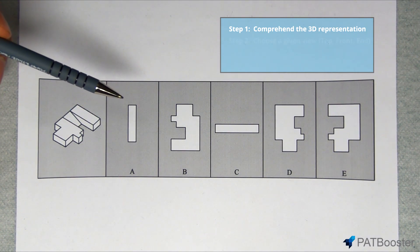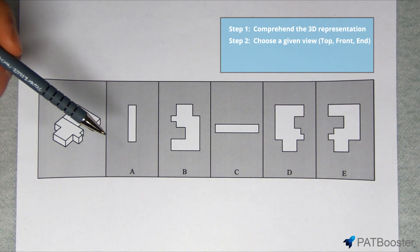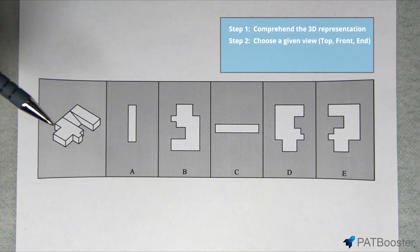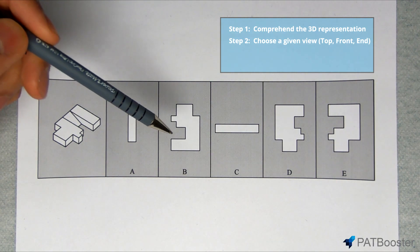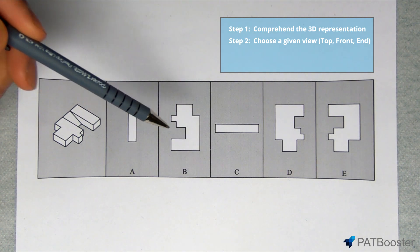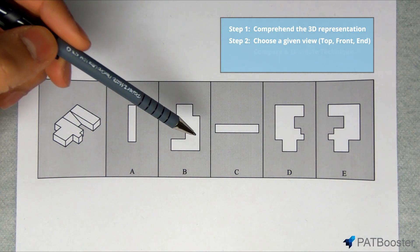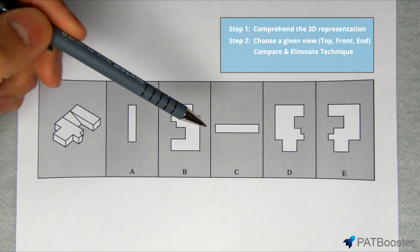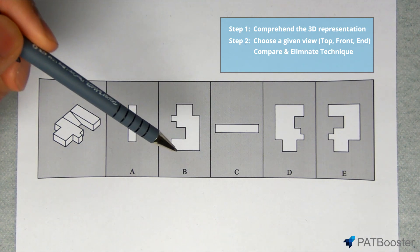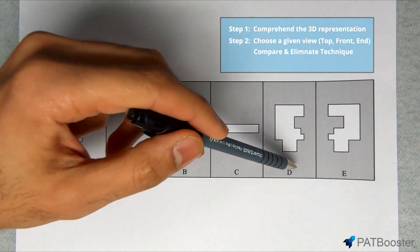So step two is to choose a view and begin the compare and eliminate cycle. This step is best understood in action so I'm just going to dive right in. So I'm gonna choose a view to begin with and I usually pick one that shows up the most in the option choices and in this case it's the top view. So next you begin the compare and eliminate cycle and all that means is that you look for differences between the options of the selected view. So I'm going to compare B, D and E.